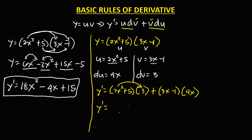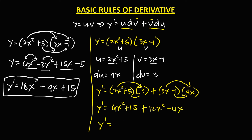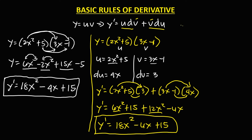Simplifying: 2x squared plus 5 times 3 gives 6x squared plus 15, plus 3x minus 1 times 4x gives 12x squared minus 4x. Combining like terms: 6x squared plus 12x squared is 18x squared, minus 4x plus 15. So y prime equals 18x squared minus 4x plus 15. Observe that we have the same answer using both methods.